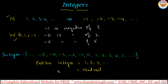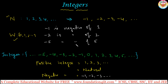In the same way, negative integers are the negatives of natural numbers. Those are minus 1, minus 2, minus 3, and so on. This is the set of negative integers.